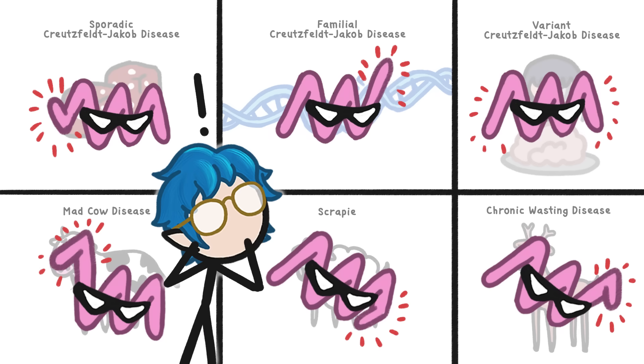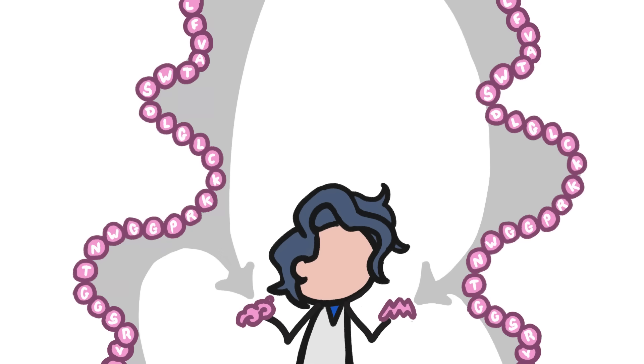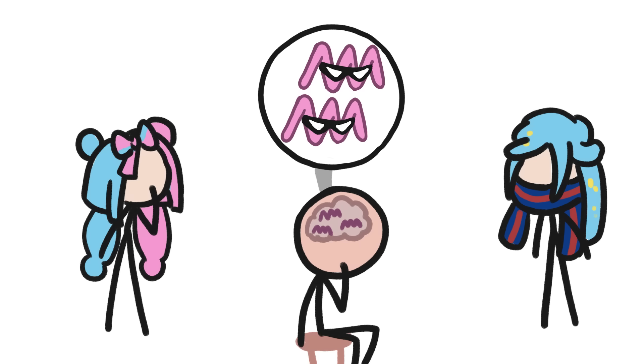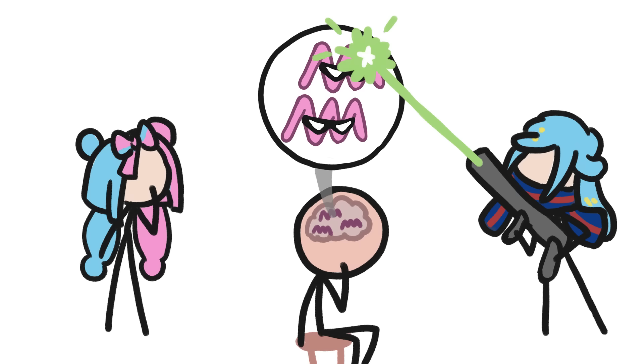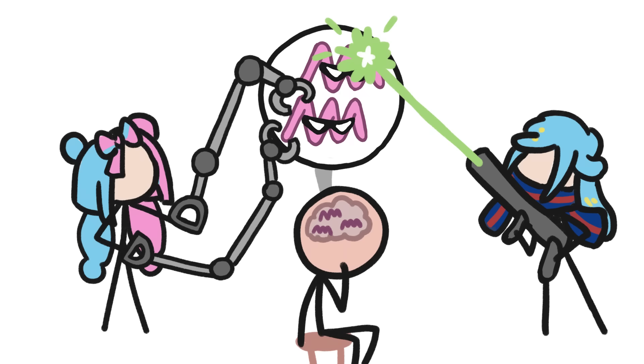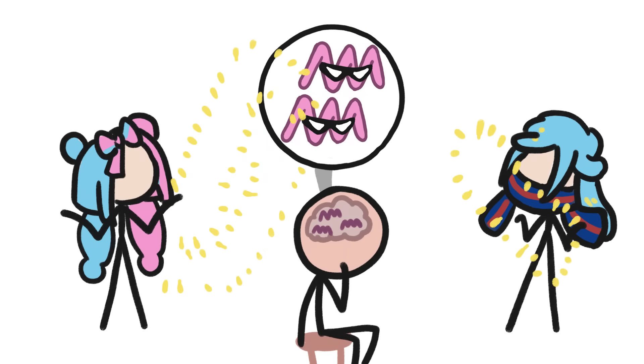And it's the misfolding that makes prion diseases so tricky. After all, prions are molecularly identical to proteins that normally exist in our body. They're just folded differently. So it's hard to even detect prions in the first place. And to treat this disease, we'd need a way to go in and either destroy or refold all those misfolded proteins. And that's technology that scientists haven't figured out yet.